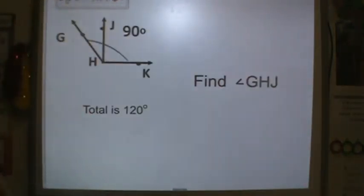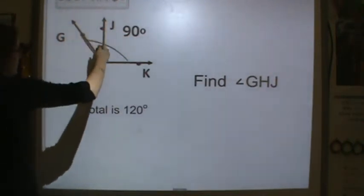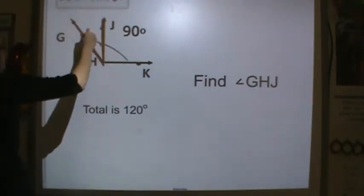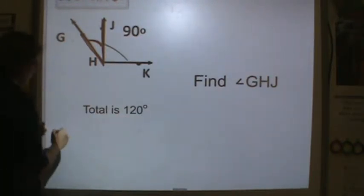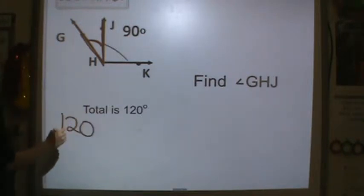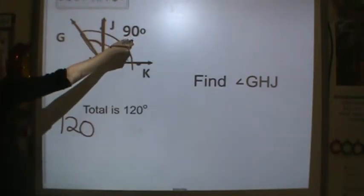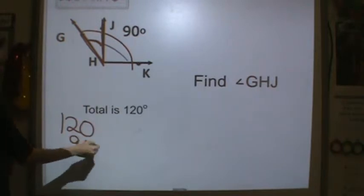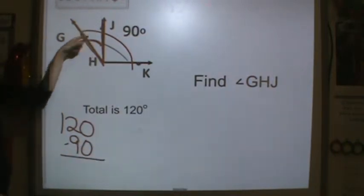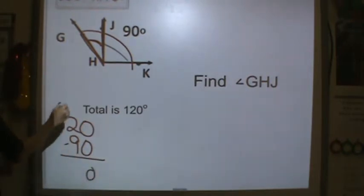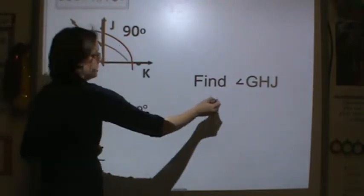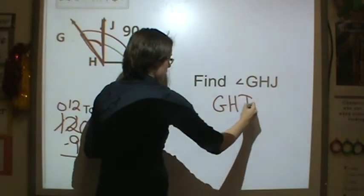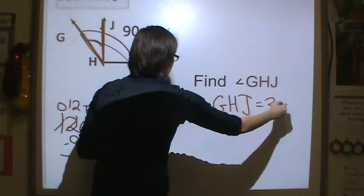Let's find GHJ. So GHJ is the missing portion, it's right here. It's telling me that the total is 120 degrees. So I have 120 degrees total. I know that this part is 90. So I'm going to subtract to find angle GHJ. So I'm going to have to probably regroup because I can't take 2 from 9. 9 from 12 is 3. So this missing angle GHJ is equal to 30 degrees.